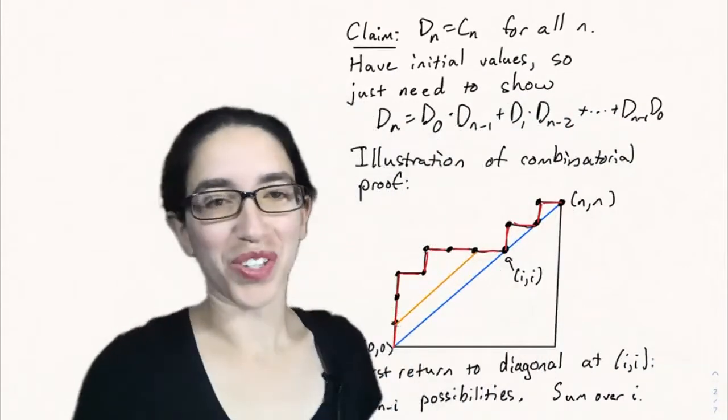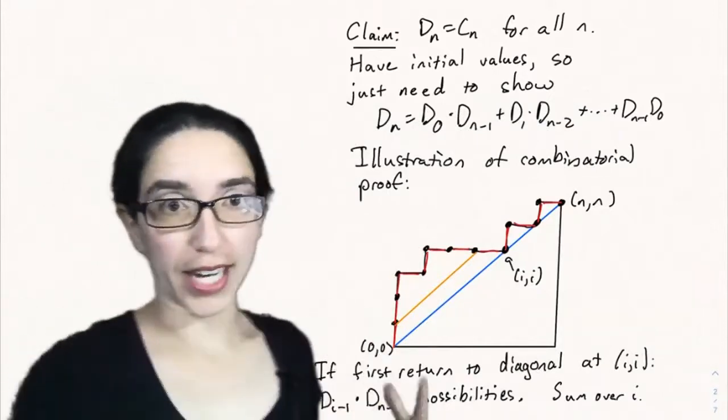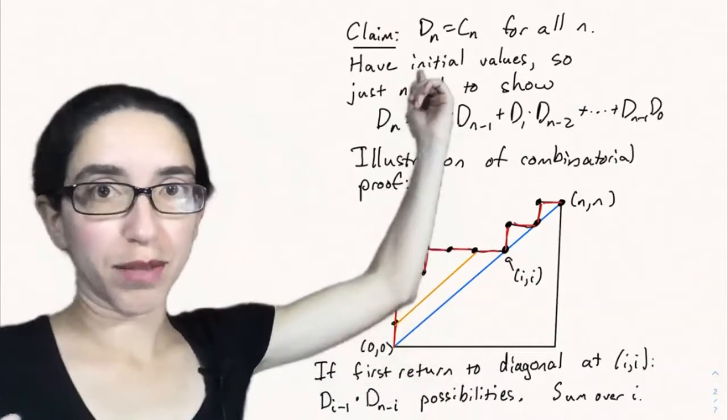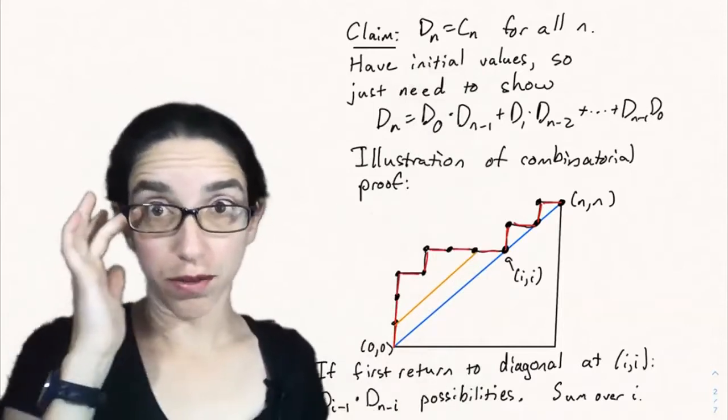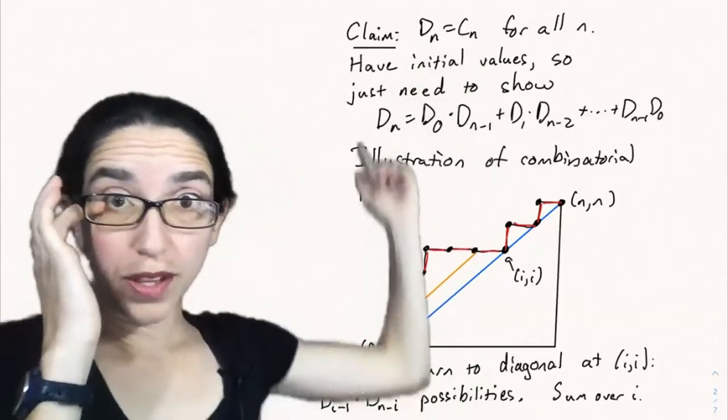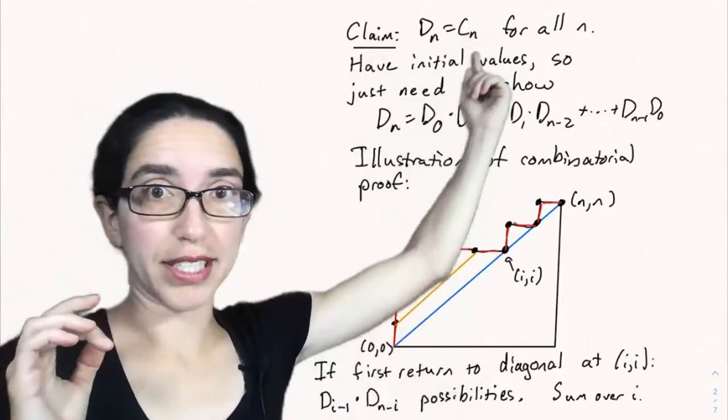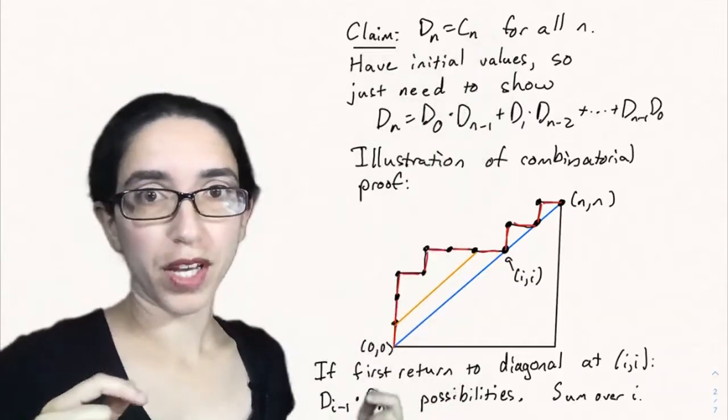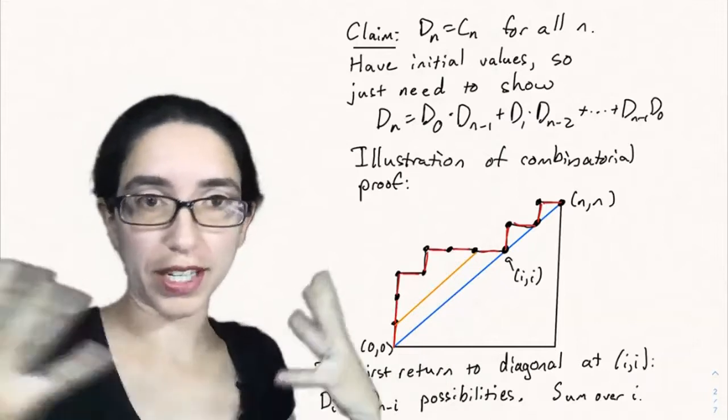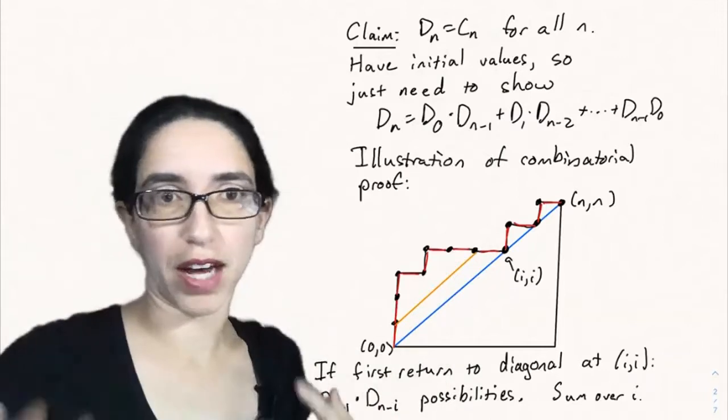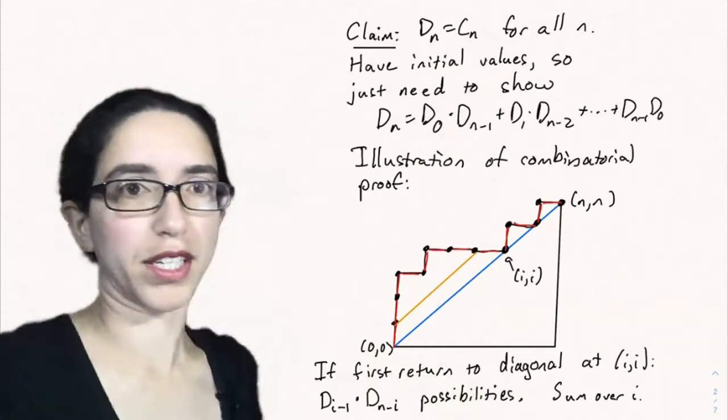This isn't a coincidence. So let's try to prove, or at least get the idea of the proof, of why D sub n actually equals C sub n, the nth Catalan number, for all n. We know that they have the same initial values, so we just need to show that D sub n satisfies the same recursion as C sub n. To review recursions, go back to the recursion video. This is a method of how we show that something is equal to a recursively defined sequence.